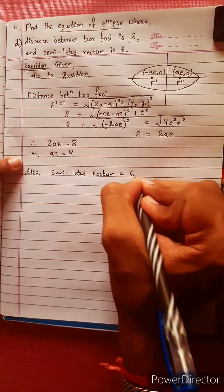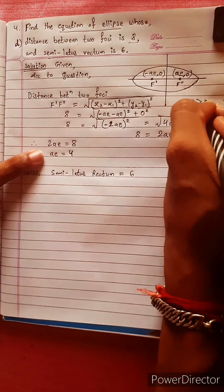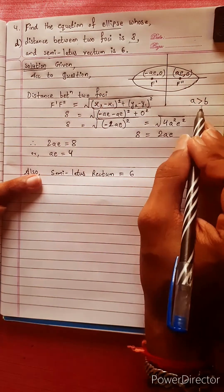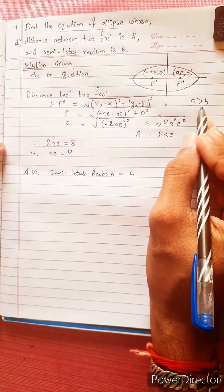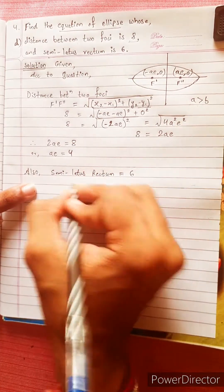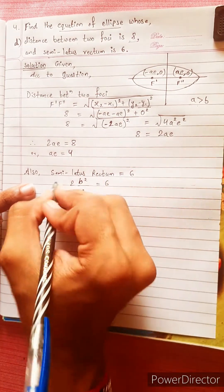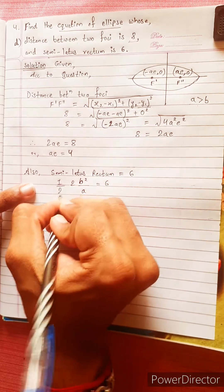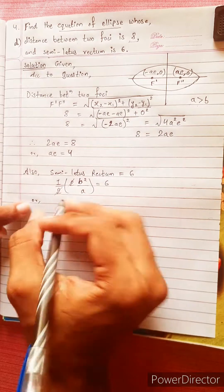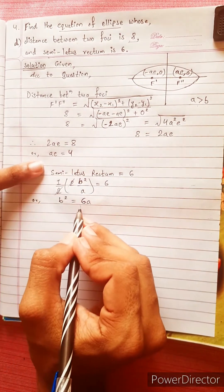The latus rectum formula, when a is greater than b, gives latus rectum = 2b²/a. So the semi-latus rectum = b²/a = 6, which means b² = 6a.